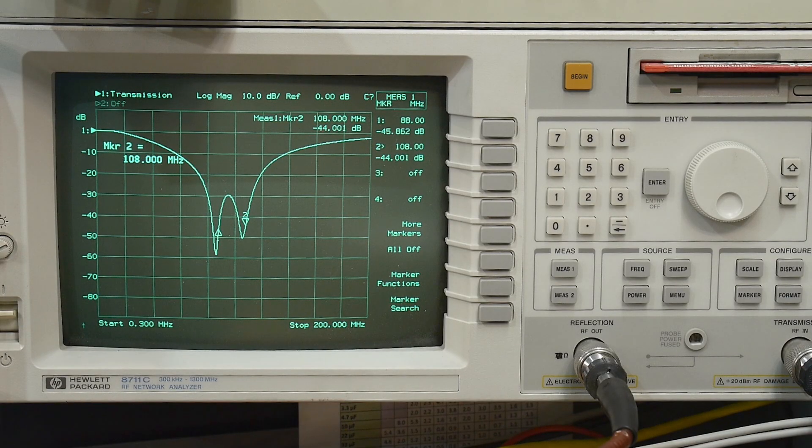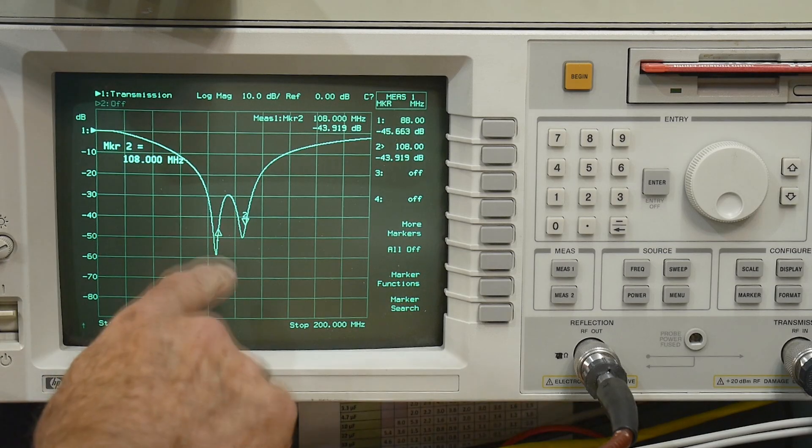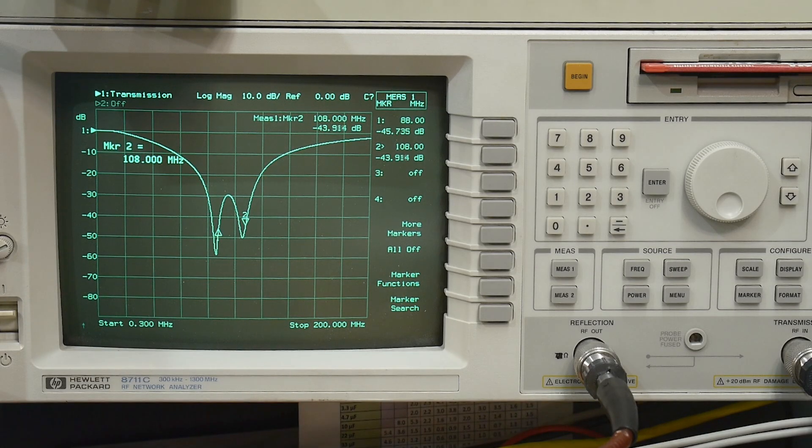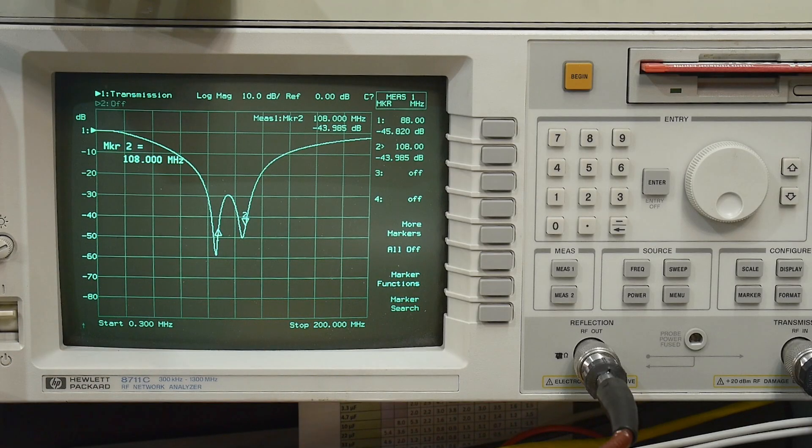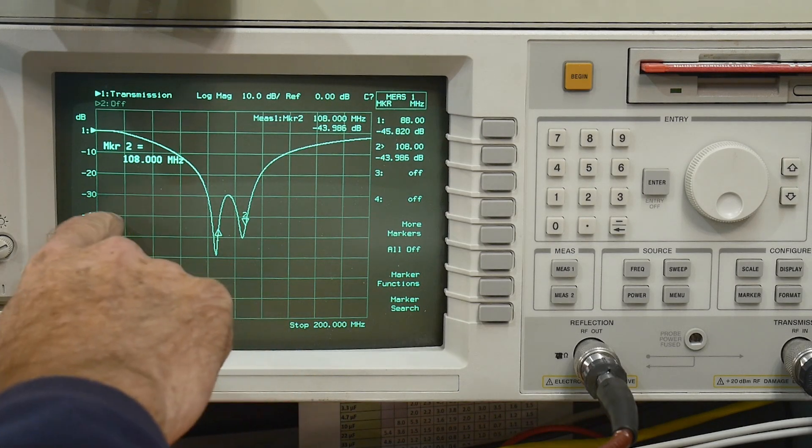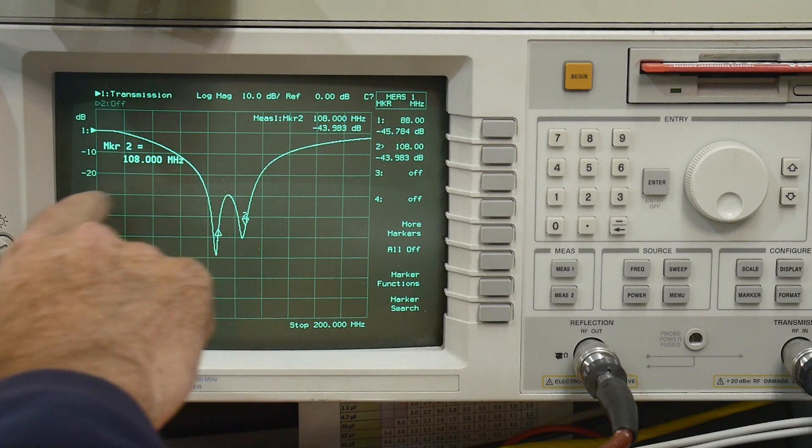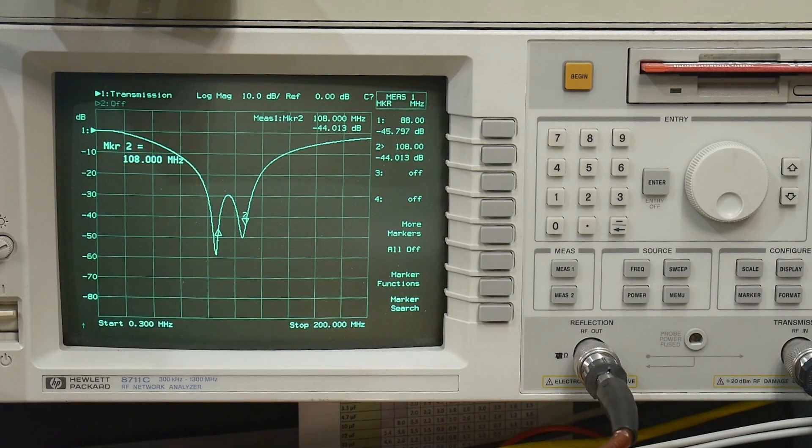It's doing exactly what you want - it's rejecting the FM broadcast band. It's got this little loop in there, but it's still rejecting at least 30 dB there and going down to 50 dB at other places. Yeah, it's a nice little filter if you need such a thing.